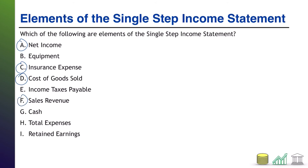G — cash — cash is a current asset that goes on the balance sheet. H — total expenses — yes, that will go on the income statement. You want to subtotal your revenues, you want to subtotal your expenses, then you take the difference and calculate net income.